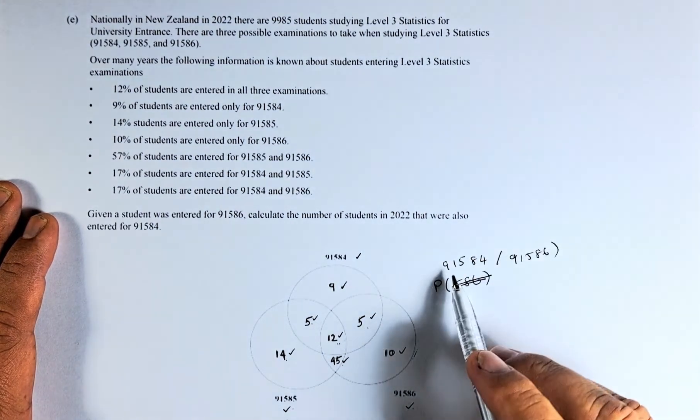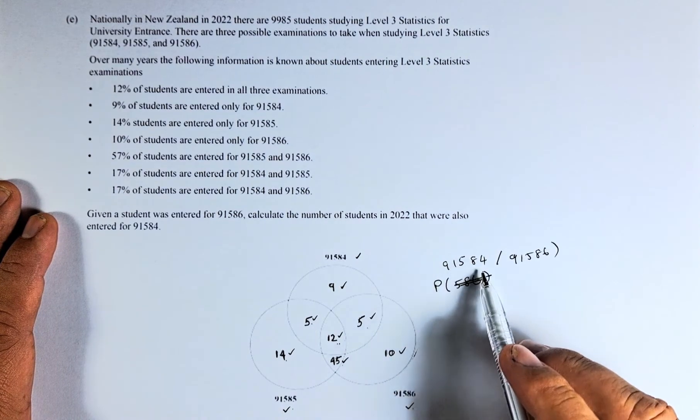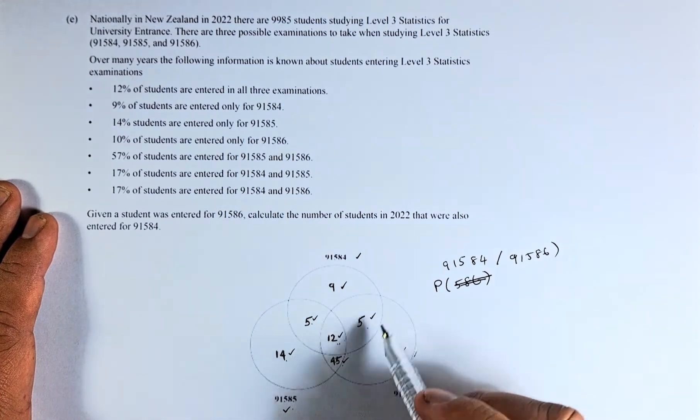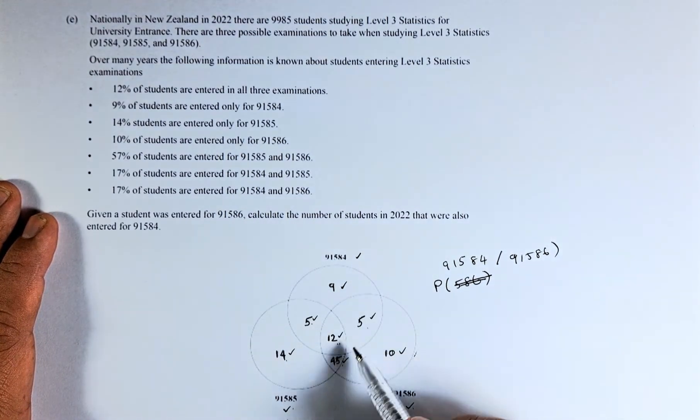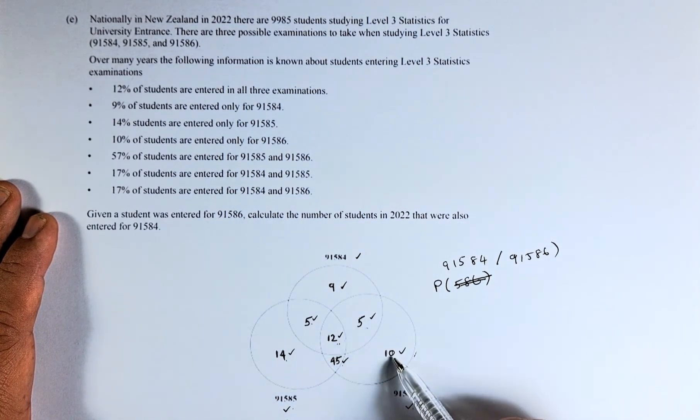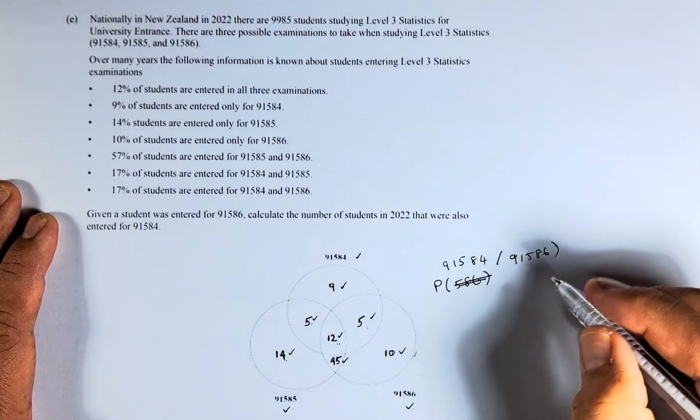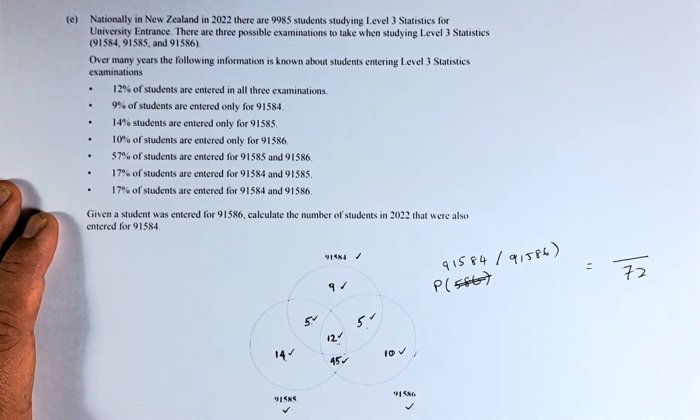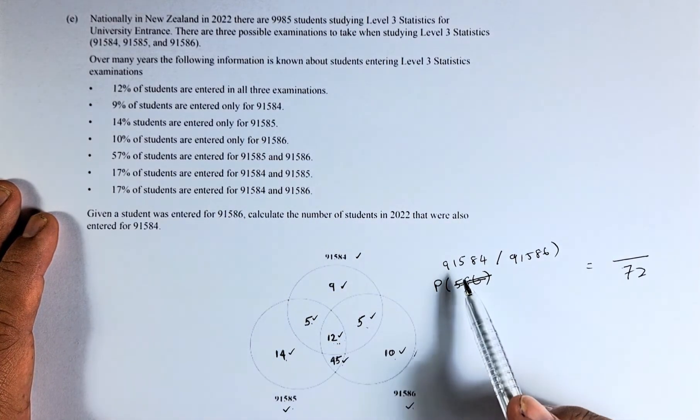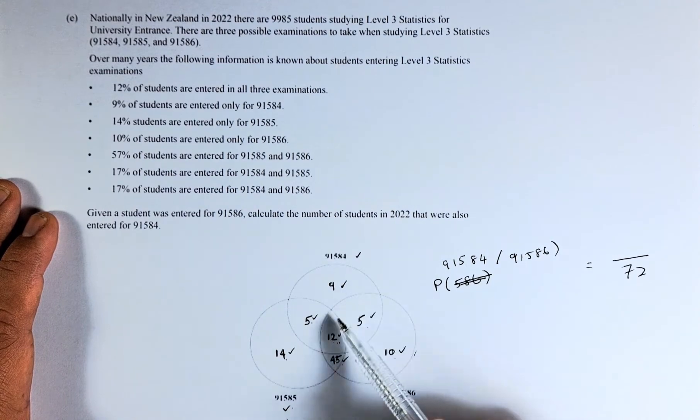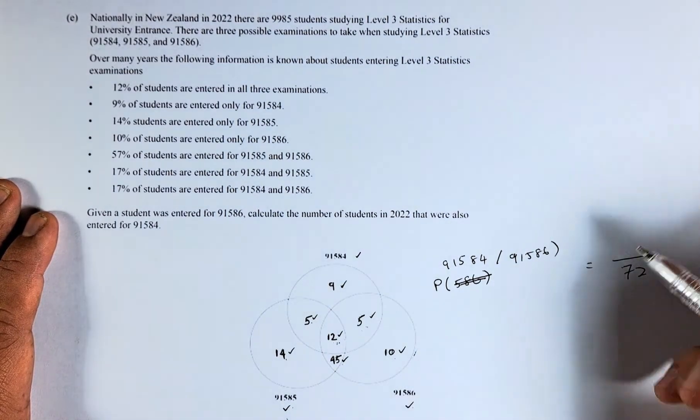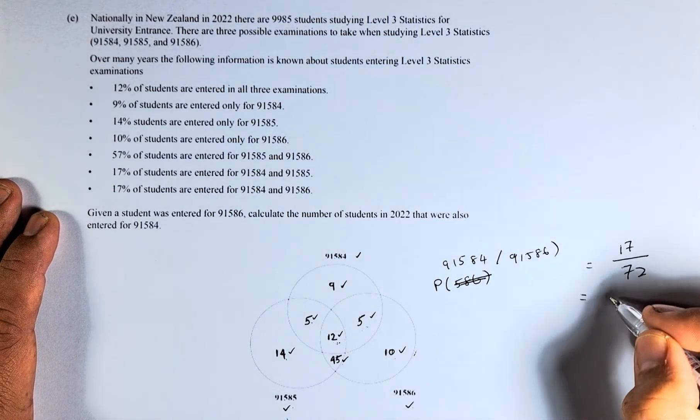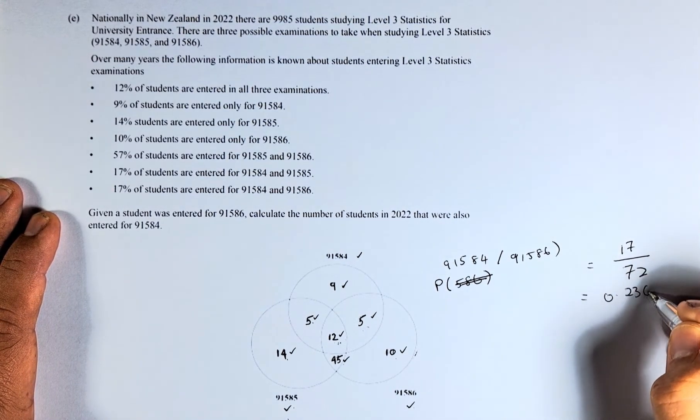So the probability of doing 91584 given they're doing 91586. For 91586 the total, you add the region here: 45 plus 5 is 50, plus 10 is 60, and then plus 12. So the probability is out of 72. And how many of them did 91584? 91584 is 12 plus 5, going to be 17 over 72. And the answer is, put in your calculator, 0.2361.